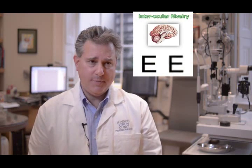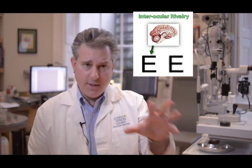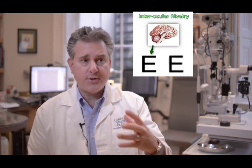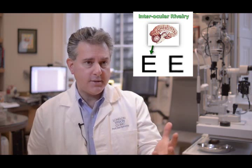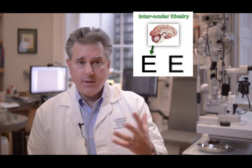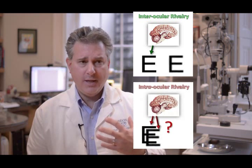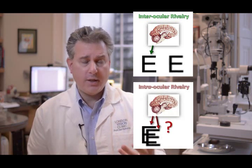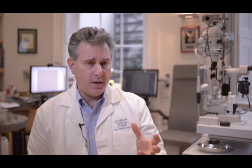Finally, the natural process of interocular rivalry identifies the eye with the sharper field of vision for a given distance and then selects that eye to become the dominant conscious vision at that distance. This is quite in contrast to the intraocular rivalry that is required in a multifocal approach, or the suppression that is required in a mono-vision approach.